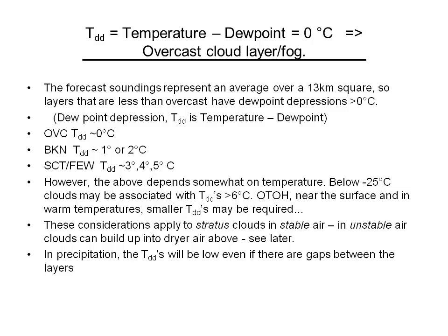Conversely, near the surface when temperatures are high, you may require somewhat smaller dew point depressions to get the same amount of clouds. These considerations apply to stratus-type clouds in stable air. If the air is unstable, the potential is that clouds can build upwards into the drier air above — so just because the temperature-dew point depression is large doesn't necessarily mean there's no cloud there. Potentially there could be a cumulus cloud that built up from below.